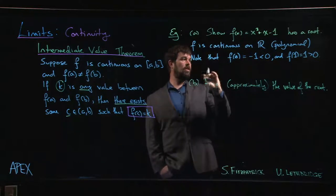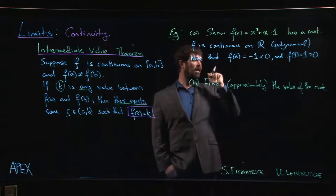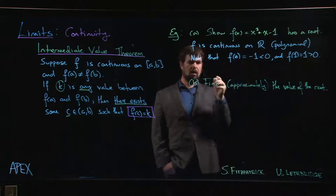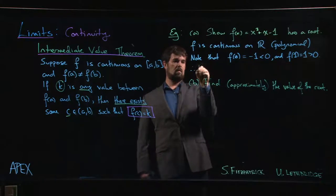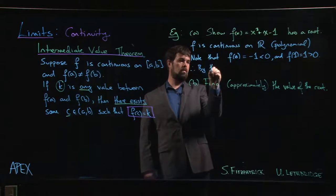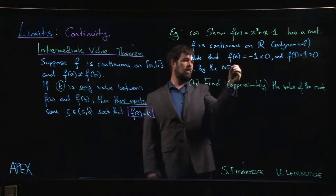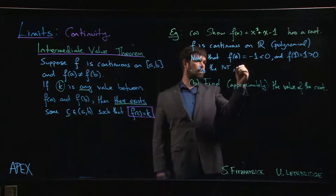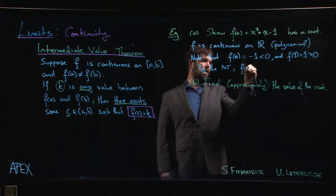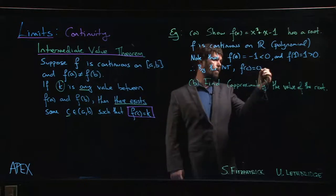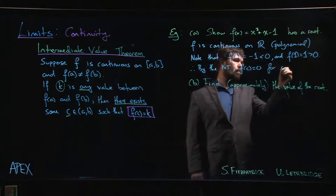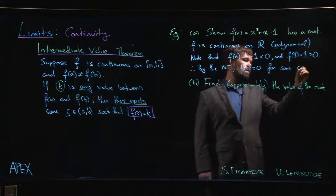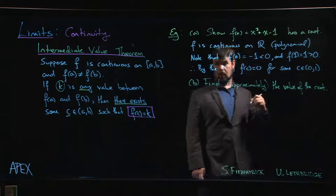So since f is continuous, since it's negative at zero and it's positive at one, we know by the intermediate value theorem f of c will be zero for some c between zero and one.